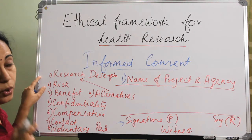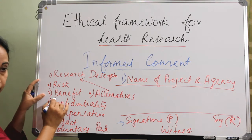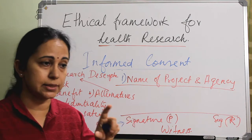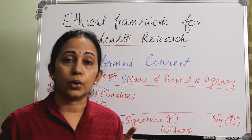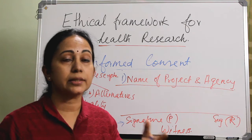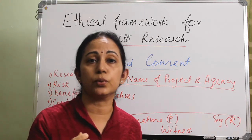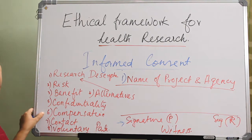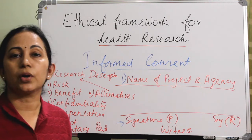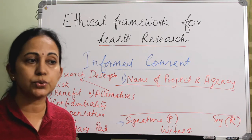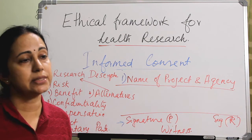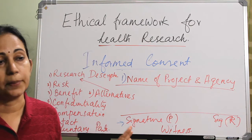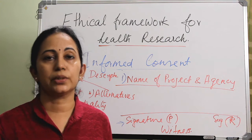In the body of the informed consent, the first element is a brief research description of what you are going to do, followed by the benefits. Alternatives should also be mentioned — for example, if performing a stapedectomy for conductive hearing loss caused by otosclerosis, the alternative of fitting a hearing aid should be disclosed. The body should also include confidentiality provisions and compensation details. Compensation can cover lost wages and travel allowances, but money cannot be given to a participant solely for participating in the study — that is against ethics.